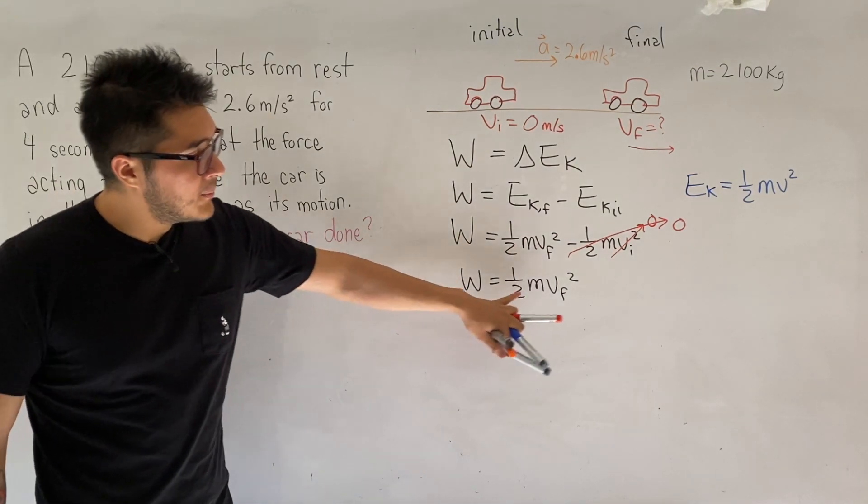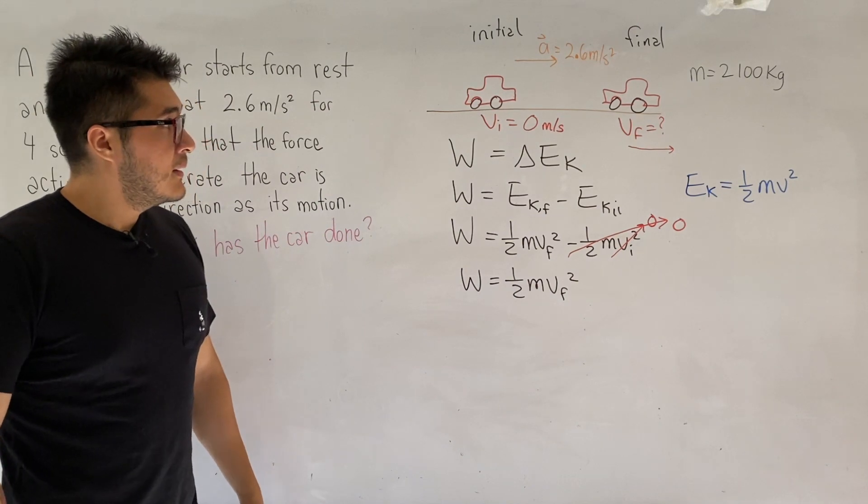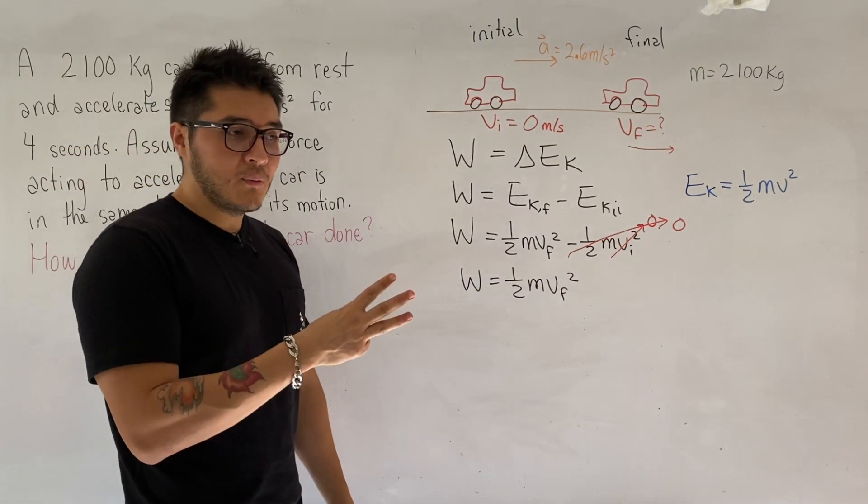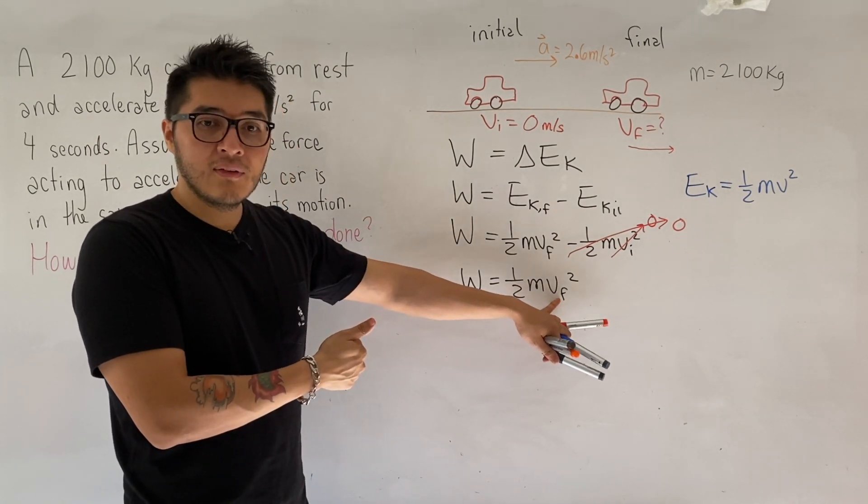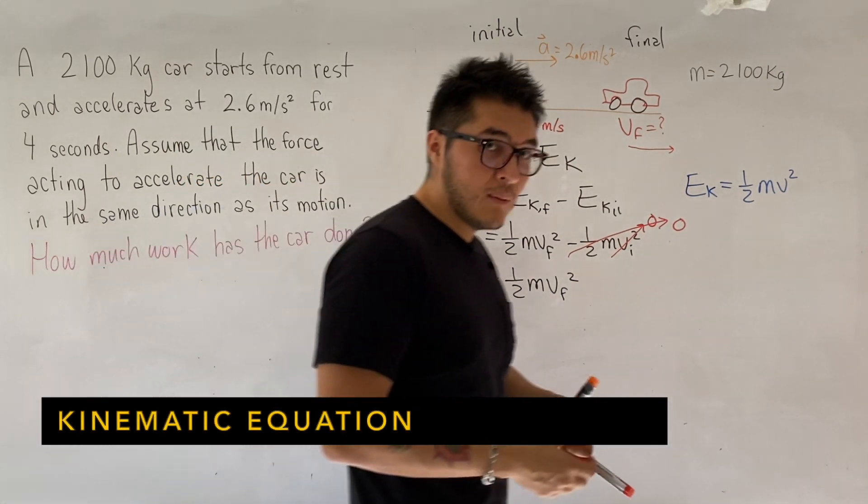So we're looking for work. We know the mass, but we don't have the final velocity. Whenever we're stuck, we're never really stuck because now we're in unit 3, we have unit 2, which are the forces to rely on. But in this case, we're missing the final velocity. So we're going to think back to kinematics. So let's recall the kinematics equations.